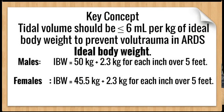How do we calculate ideal body weight? In males, it is 50 kg plus 2.3 kg for each inch over 5 feet. In females, it is 45.5 kg plus 2.3 kg for each inch over 5 feet.